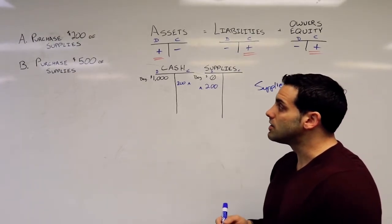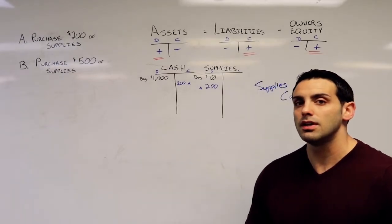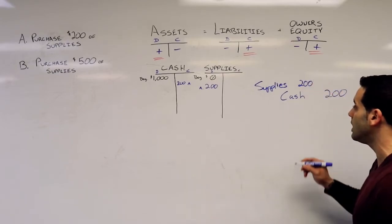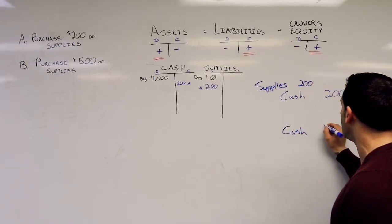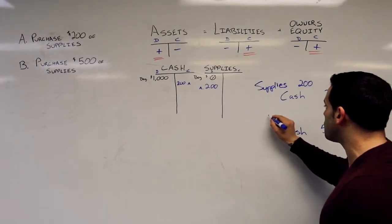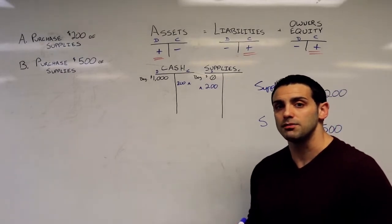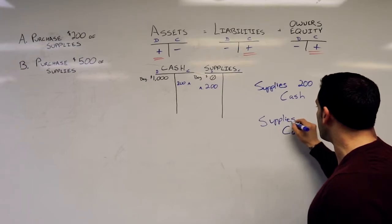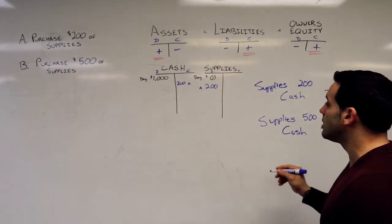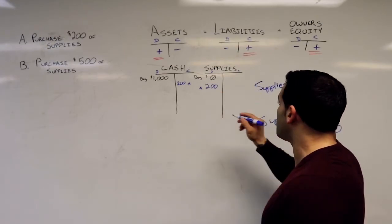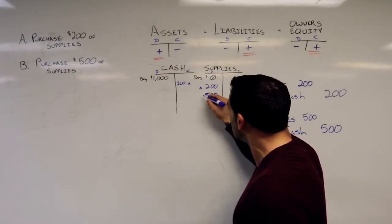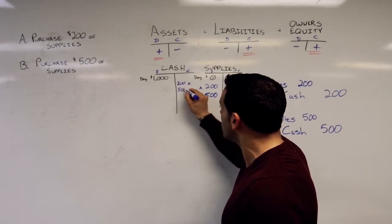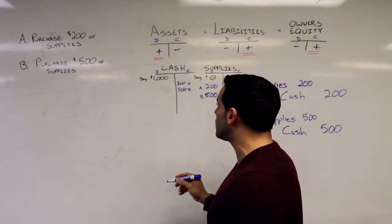Sometimes it may not be labeled as transaction A — it might actually be a date, so you can see the dates and follow the activity chronologically. Our second journal entry is very similar to the first — in fact, it's the same thing, just with a different value. I'm paying $500 in cash, so again I'm going to credit cash for $500, and I'm going to debit supplies because we're increasing that asset for $500 as well. I debit my supplies for $500 because I increased my supply inventory — that's transaction B — and I credit my cash for $500.